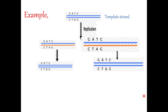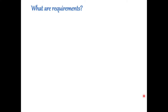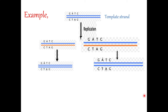What are the requirements for DNA replication? The first requirement is a strand of DNA which serves as a template. For example, these two strands serve as a template. Upon this template, the new strand will be synthesized. So the template strand is the first requirement.